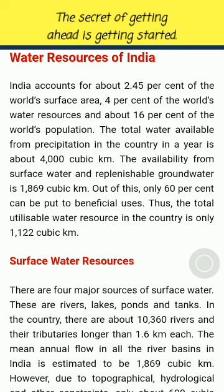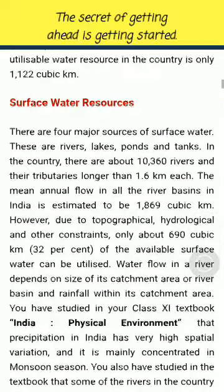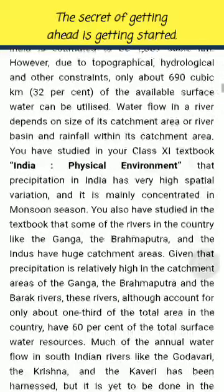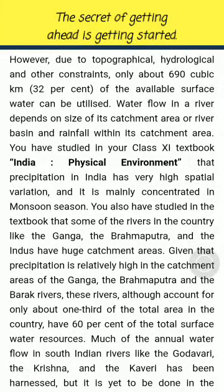Surface Water Resources: There are four major sources of surface water — rivers, lakes, ponds and tanks. In the country, there are about 10,360 rivers and their tributaries longer than 1.6 km each. The mean annual flow in all the river basins in India is estimated to be 1,869 cubic km. However, due to topographical, hydrological and other constraints, only about 690 cubic km, that is 32% of the available surface water, can be utilized.